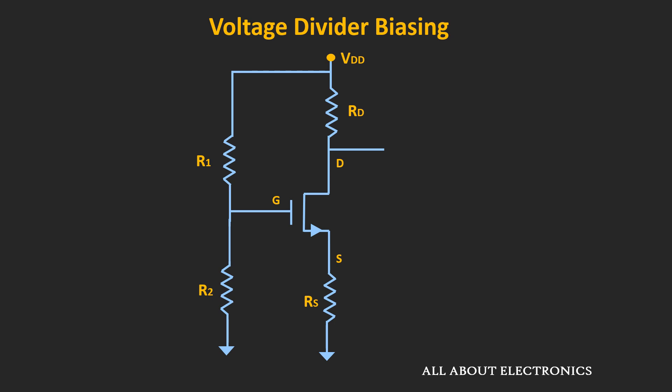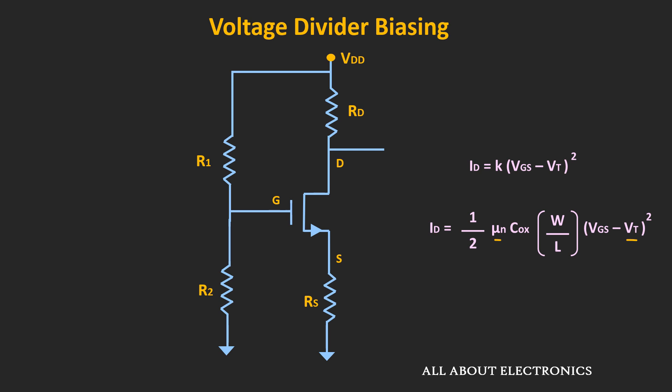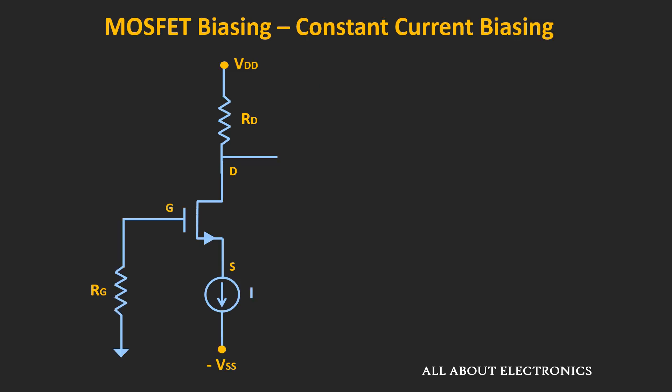Some variation will remain in the voltage divider bias and drain feedback bias because µn and Vt are temperature dependent. If we want a more robust operating point, the MOSFET can be biased using a constant current source. This constant current source ensures that the drain current remains constant even if there is a change in external parameters. This type of circuit is typically used in integrated circuits as a MOS amplifier. In ICs, this constant current source is generated using a current mirror — we will also see how the current mirror can be designed using the MOSFET in upcoming videos. For now, just assume this constant current source is readily available, and using it, it is possible to bias the MOSFET in a more robust manner.